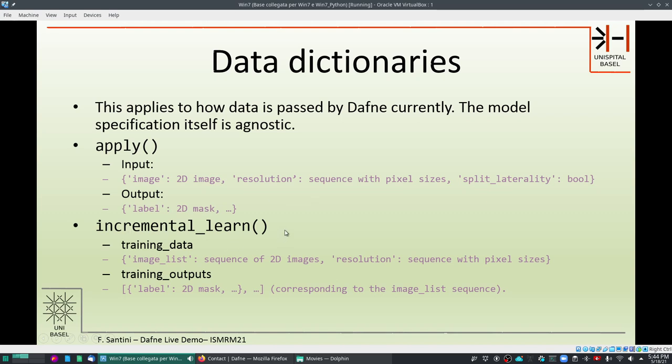Incremental learn has inputs that are slightly different because the training data is a dictionary that has also the resolution size and the resolution field with the same sequence of the pixel sizes. In principle we don't have the split laterality here because we'll try to infer it from the desired output. The other field in the training data is the image list which is a sequence of 2D images, so it doesn't have to be a 3D image, we can be just an array containing various variable number of 2D images.